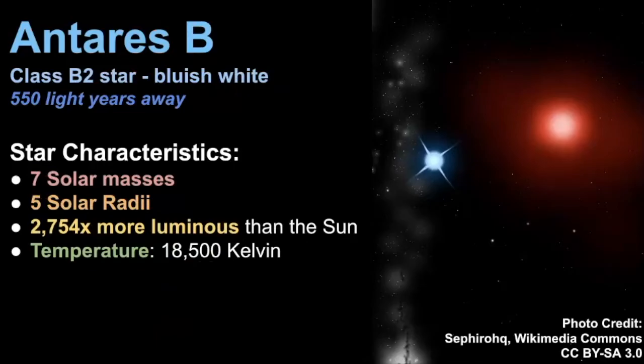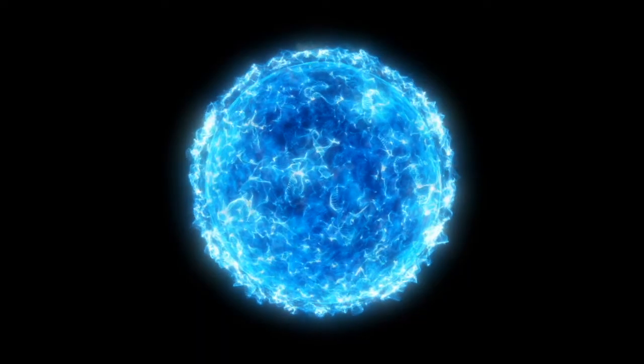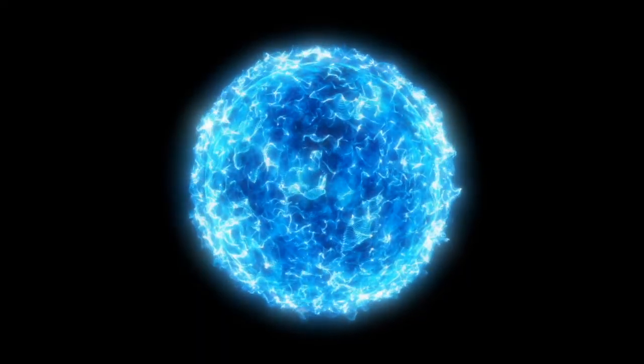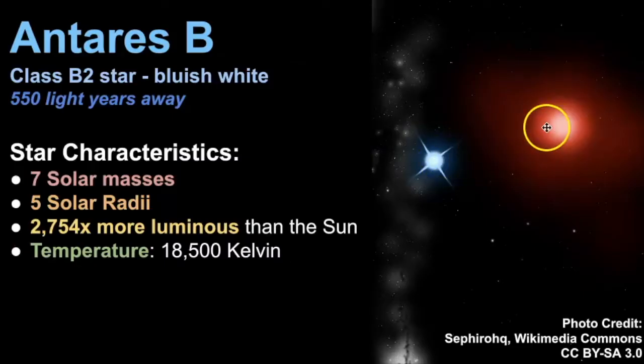Now looking at Antares B, this is classified as a B2 star, which is a blue giant star. It's bluish white in color, and also the same distance away. It is much larger than our own sun. It's estimated to have seven solar masses and five solar radii. And it's 2,756 times more luminous than the sun. And it's much hotter than our own sun at 18,500 degrees Kelvin. And these two are separated by 529 astronomical units.